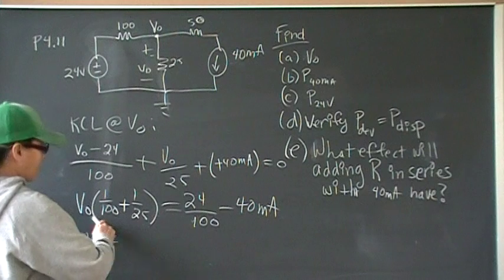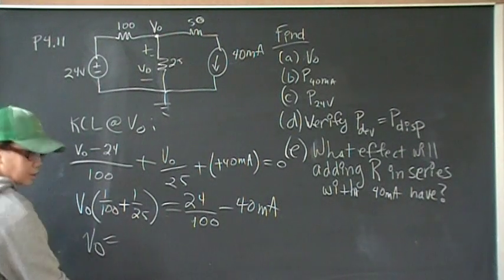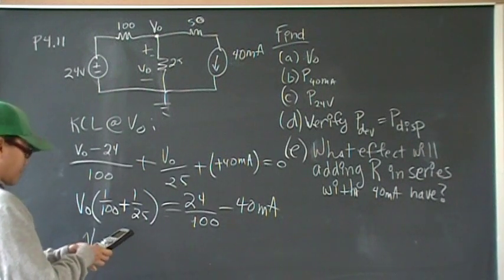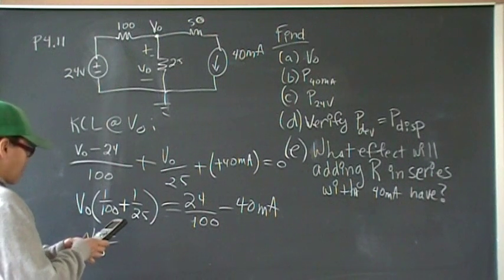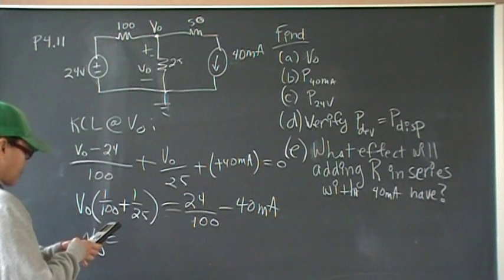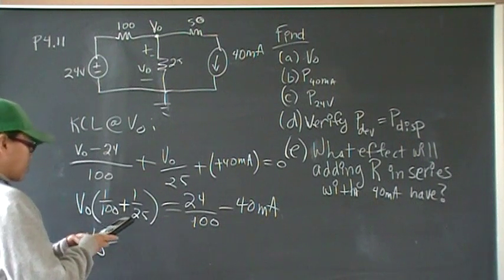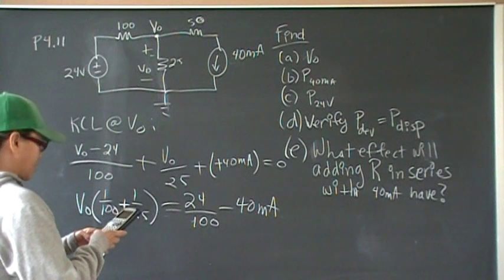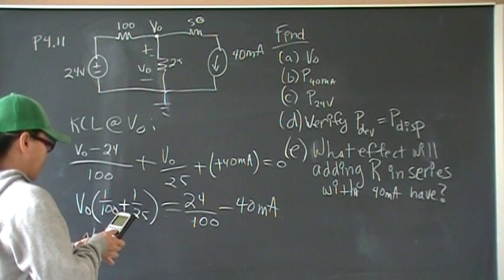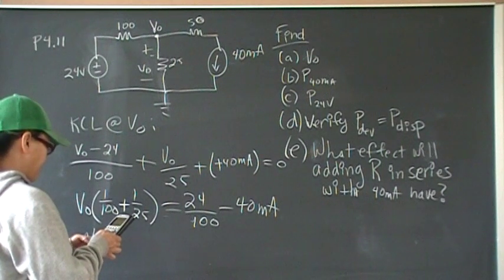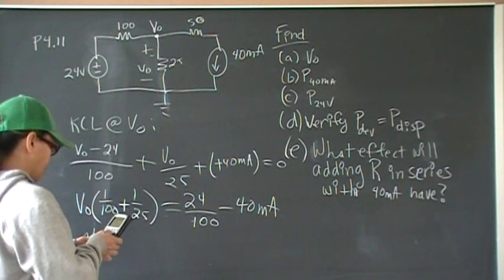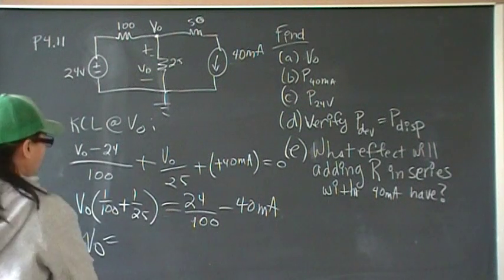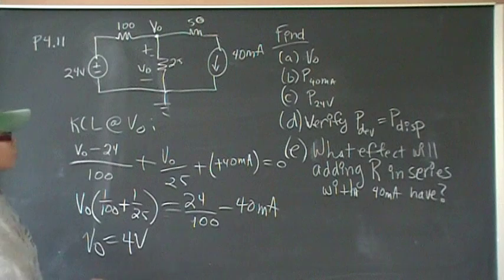So then V naught is going to be all of that divided by this. We take 24 divided by 100 minus 0.04. And then 1 divided by 100 plus 1 divided by 25 into 24 divided by 100 minus 0.04. So that should give you that V is equal to 4 volts, which is the answer for part A.